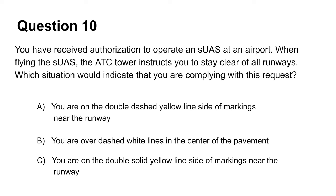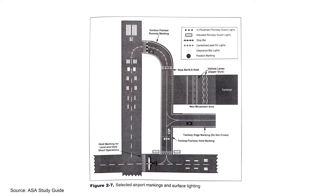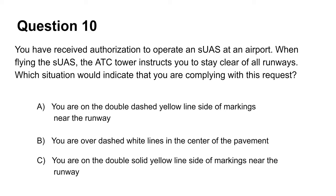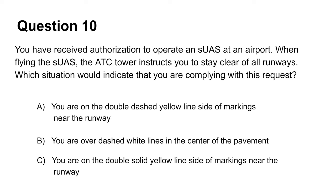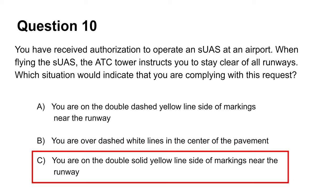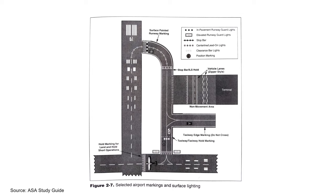The tenth question asks you to identify actions by the drone pilot that will indicate compliance with the ATC tower's request to stay clear of all runways. This again refers to the runway holding markings on taxiways. Remember, if your aircraft crosses the solid lines, it is considered to be on the runway. Answer A is incorrect because you are considered on the runway if you go beyond the solid lines. Answer B is incorrect because runways are marked with dashed white centerlines, and answer B implies you are on the runway. Hence, the answer is C, since being on the double solid yellow line side of the markings near the runway means you are considered to be off the runway.